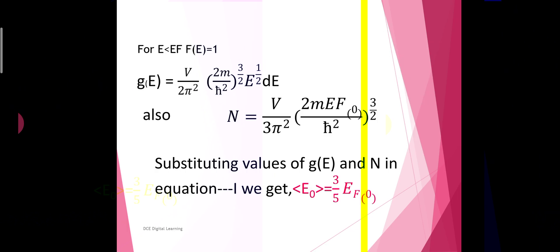The density of states g(E) = (V/2π²)(2m/ħ²)^(3/2) E^(1/2) dE, and from the earlier expression for Fermi energy, N = (V/3π²)(2mEf(0)/ħ²)^(3/2). Substituting the values of g(E) and N into the expression and integrating from 0 to Ef, we get the average kinetic energy at absolute zero: ⟨E⟩₀ = (3/5) Ef(0).